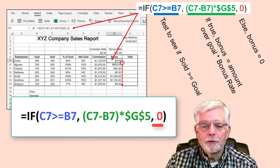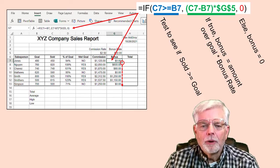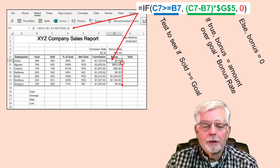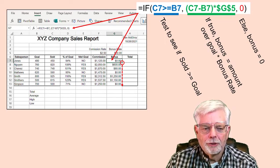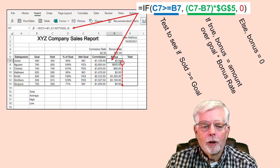Part 3 of the IF statement is what happens if the test fails. If the employee did not sell more than the goal, the bonus amount is zero. After computing the bonus for the first employee, set its format to currency and copy it down for the rest of the employees. Right-click cell G7, select the Format Cells menu option, select Number Format, then Currency with two decimal places. Use the mouse to grab the small plus sign on the lower right corner of cell G7 and drag it down to cell G13.